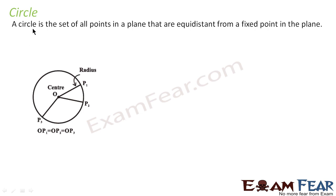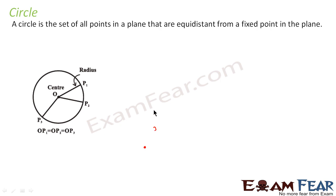Circle is a set of all points in a plane that are equidistant from a fixed point in the plane. So I need a fixed point — let's suppose this is the fixed point. Now, circle is a set of all points that are equidistant from that fixed point. Let's suppose I am talking about 3 units, so this point is 3 units from the fixed point.